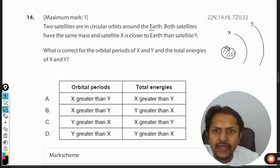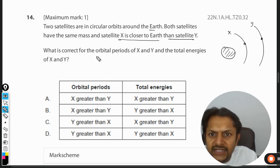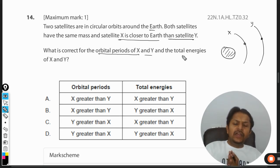This is the planet, these are the two satellites that you're talking about - this is X and this is Y. It is given that X is closer to Earth than Y and they have the same mass.